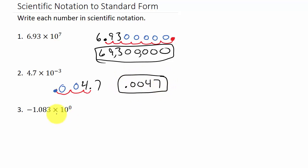Alright, let's look at the last one. Alright, so, we have negative 1.083 times 10 to the 0.